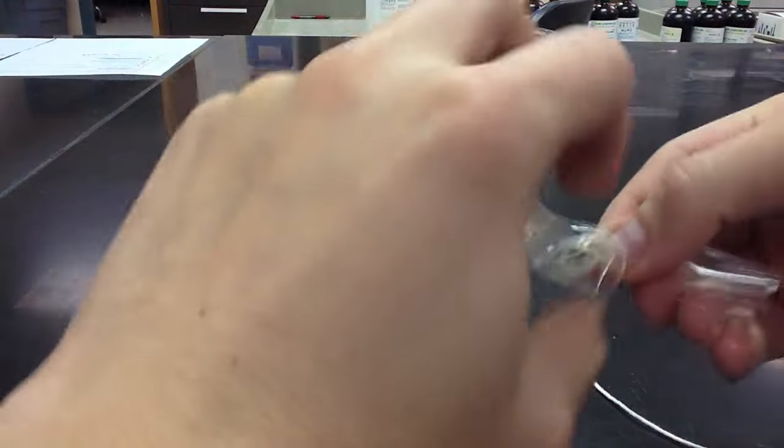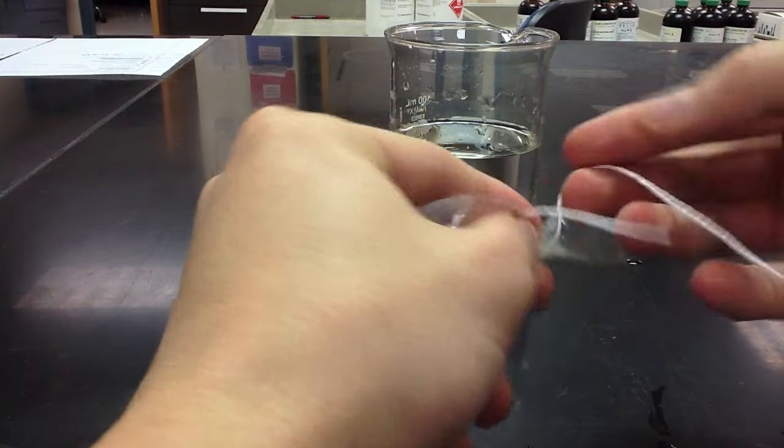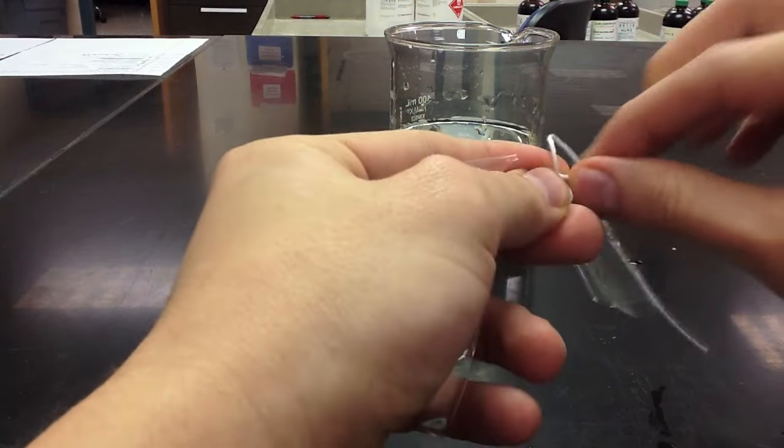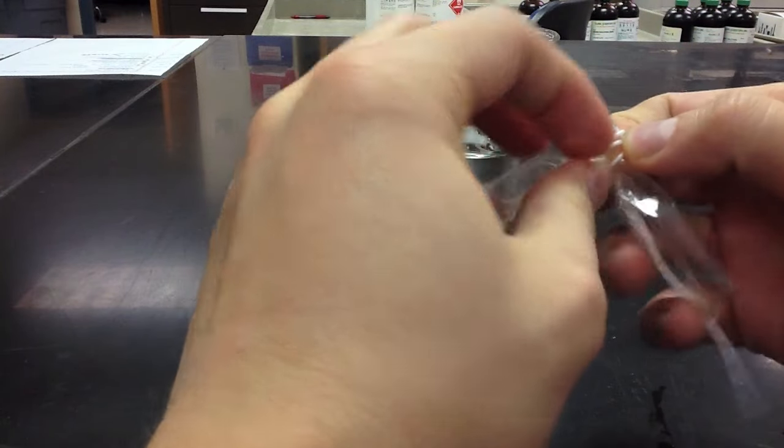Initially, what you'll want to do is twist your dialysis tubing on one end and then tie that end off with a piece of string. Make sure it's a good snug fit for the knot so that no liquid can actually seep out of this end at any point in time during the experiment.